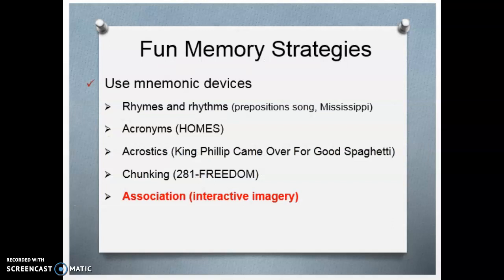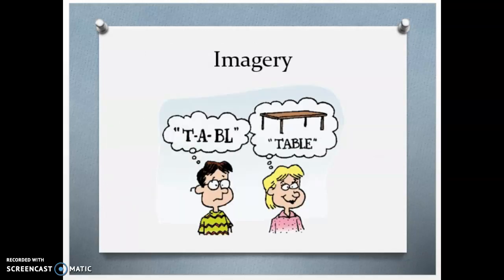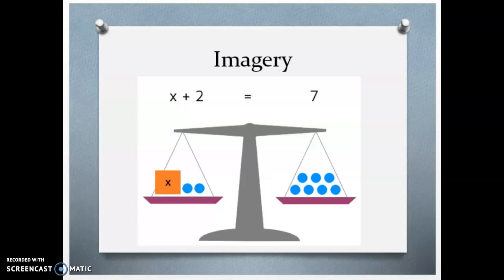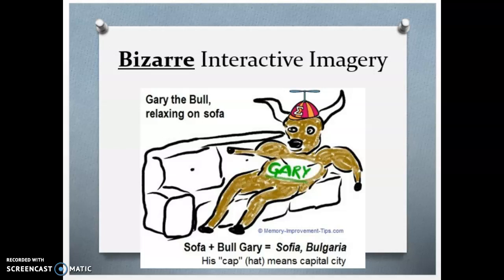Finally, there's association and interactive imagery. Notice how a lot of these things interact with each other. If you're reading something and can actually visualize what you're learning, you're much more likely to remember it. We have a lot going for us when it comes to visual memory — we tend to memorize things more easily when we see something than something we heard. For example, when learning algebra, creating a visual image can be helpful. Sometimes it helps to make it as bizarre as possible — like Gary the bull relaxing on a sofa — to help someone remember that Sofia is the capital of Bulgaria.